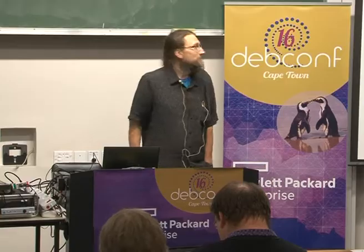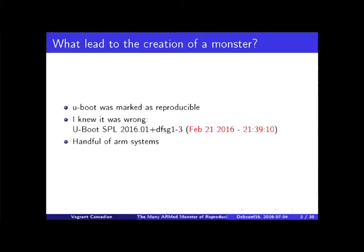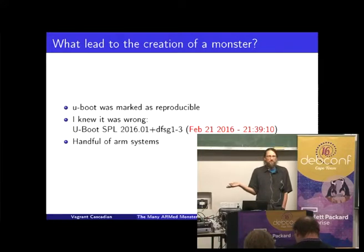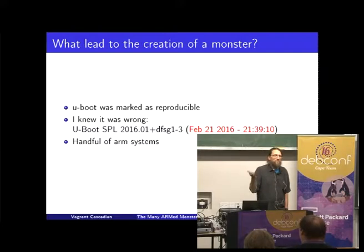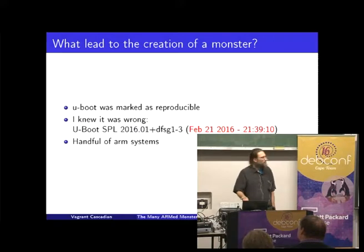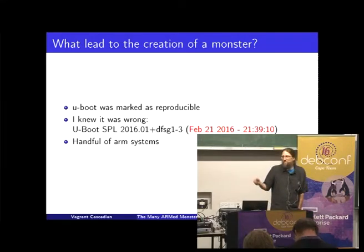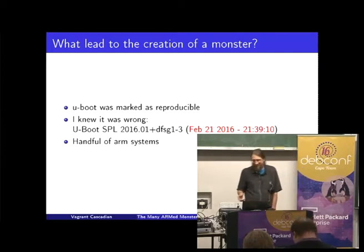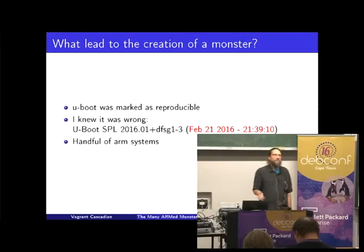So what led me to do this crazy thing? I'm the uBoot maintainer, which was kind of a crazy thing in its own right. And I noticed that uBoot was marked as reproducible, and I knew that was absolutely ridiculous because every time I booted uBoot on all these random systems I've been testing, you get a date string with the seconds in it. uBoot builds countless targets — they're not all building in under one second; it usually takes a few minutes at least. So I knew something was wrong here.